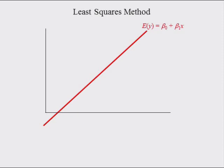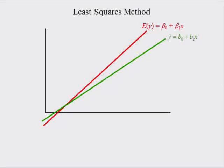The graph of the regression equation is a straight line showing how the average of variable y changes as the value of x changes. In practice, we cannot graph this line because the slope beta 1 and intercept beta 0 are unknown values. The graph of the estimated regression equation is also a straight line, showing how variable y changes as the value of x changes using the estimated intercept b0 and slope b1.